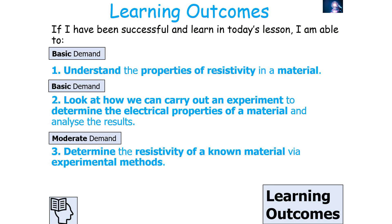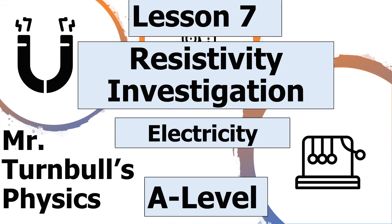To summarize, if we've been successful in today's lesson we should be able to understand the properties of resistivity in a material, determine an experiment to find the electrical properties of a material, and determine the resistivity of a known material via experimental methods. Thank you very much for watching this lesson on the resistivity investigation for the electricity topic in AQA A-level physics, and as always have a lovely day.